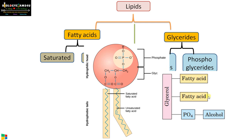Two fatty acids are joined to the glycerol backbone, then there is a phosphate group, and there may be an alcohol like ethanolamine, serine, etc. So in the case of a phospholipid, there is a long hydrophobic tail and a hydrophilic head with a phosphate group, which is why it forms the cell membrane.